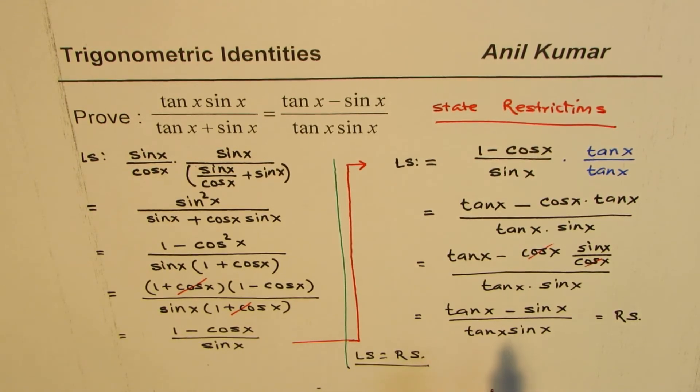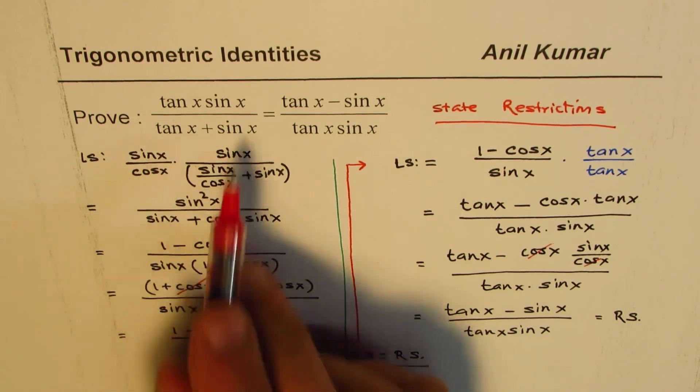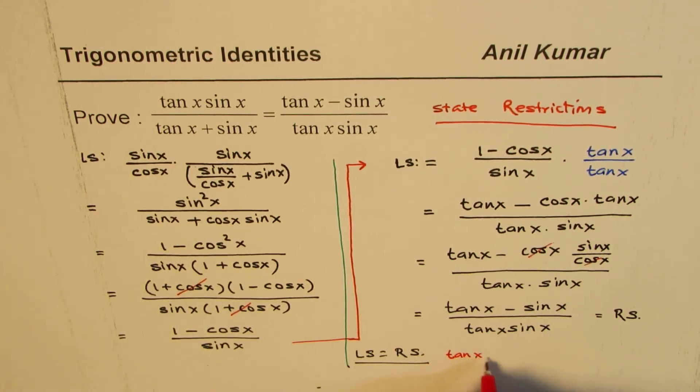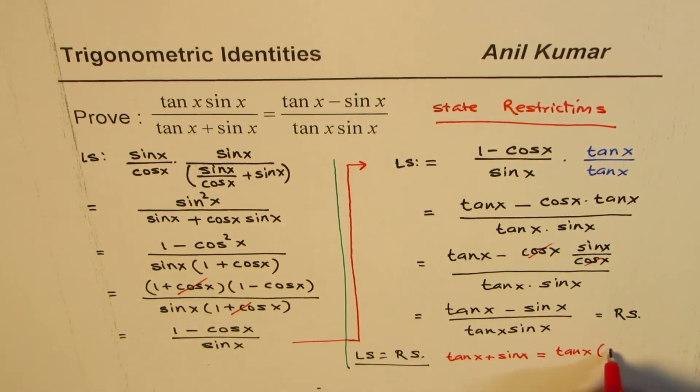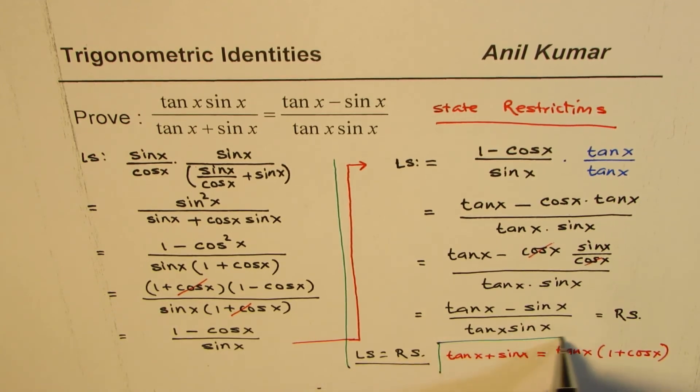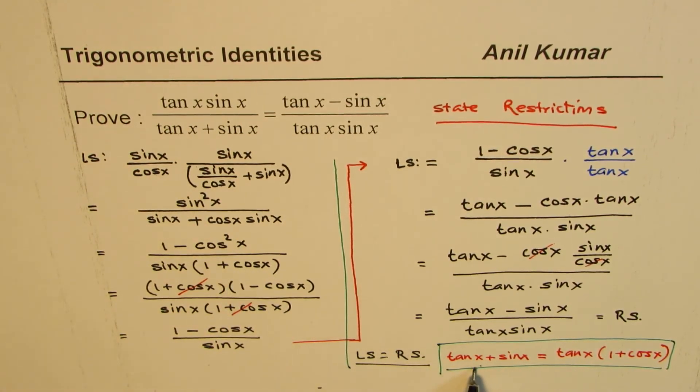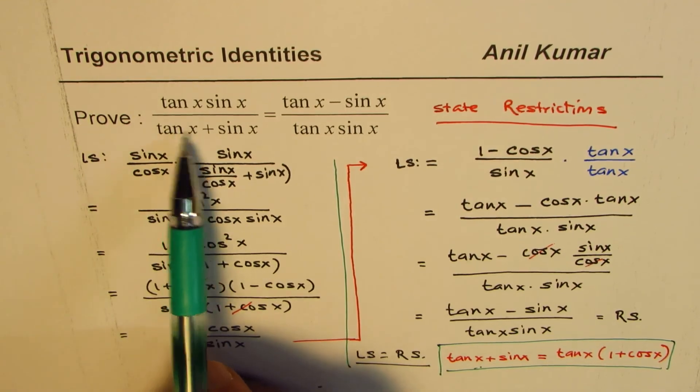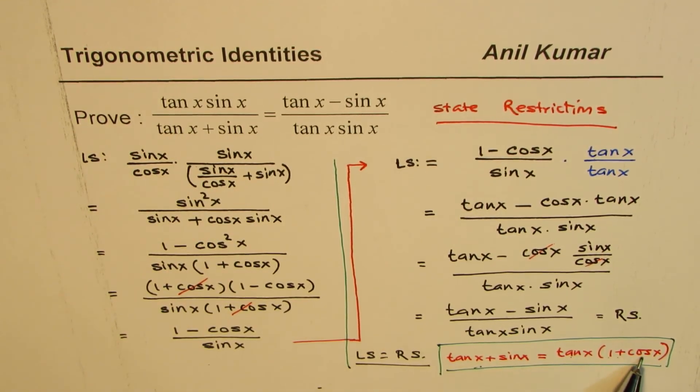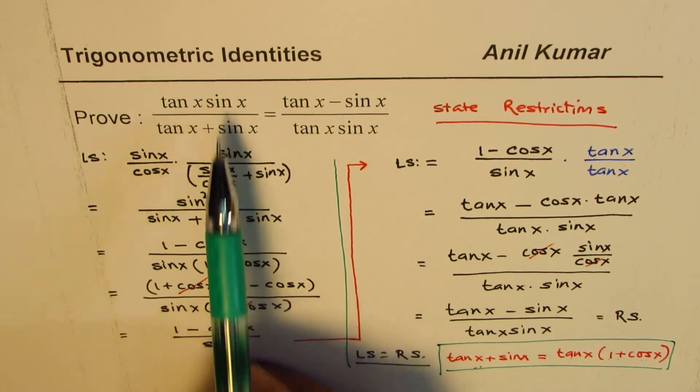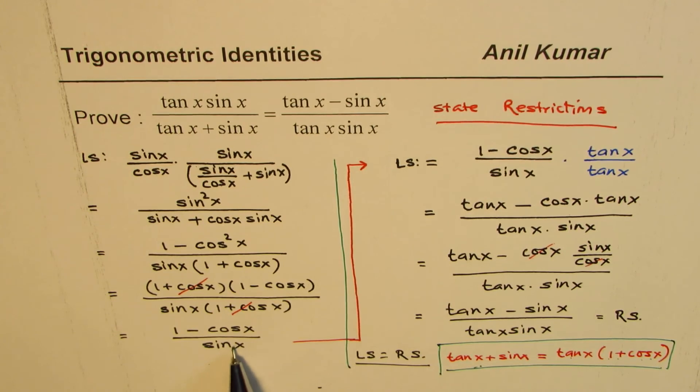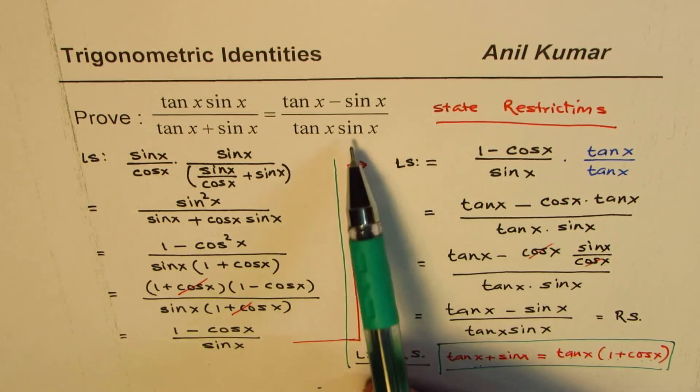You could actually solve this identity using this method. Probably this is the shortest way of doing it. You would also use some methods which we learned earlier. In one of my videos, I showed that this portion tan x plus sin x could be written as tan x times 1 plus cos x. Now you could use this strategy also to prove this identity in lesser number of steps.